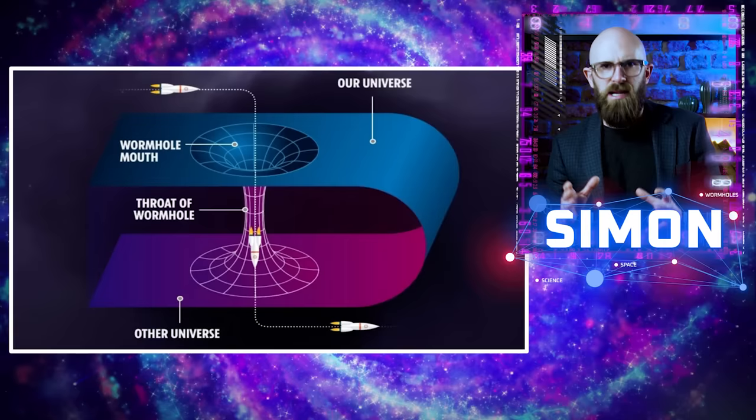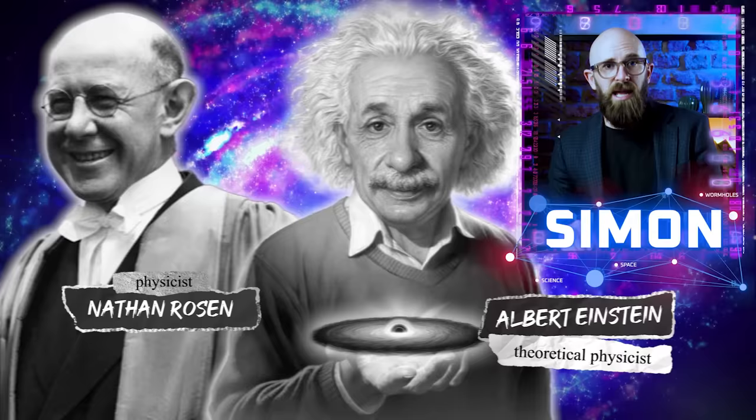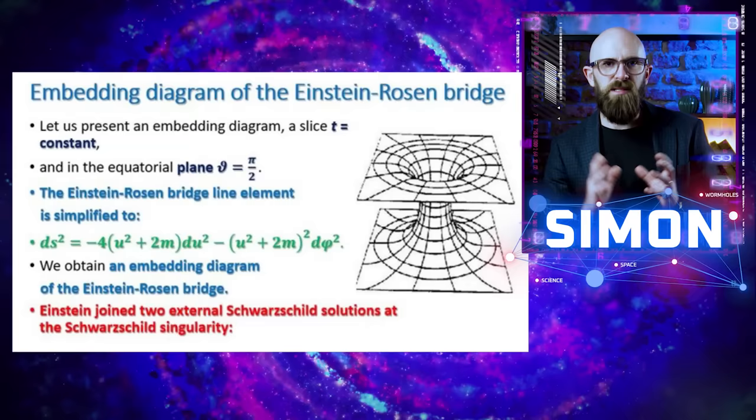Einstein collaborated with fellow physicist Nathan Rosen, and their 1935 paper expanded on the idea first performed by Flam. Their links between black and white holes were named Einstein-Rosen bridges and eventually given the colloquial name wormholes. In this paper, they also put forth the idea of wormholes connected to distant points in space-time within the same universe, essentially creating a shortcut.